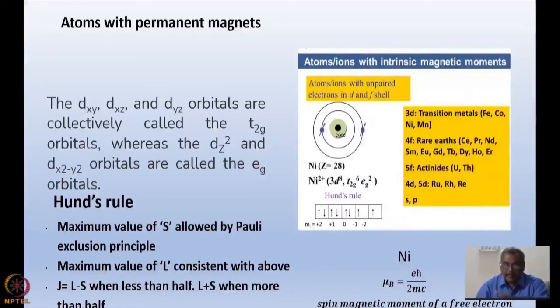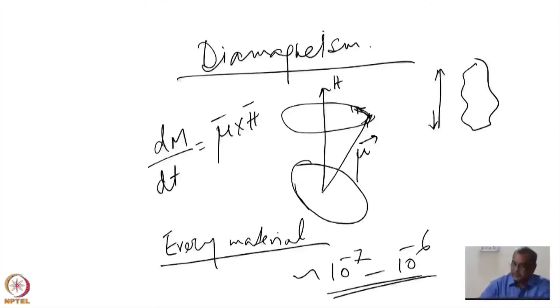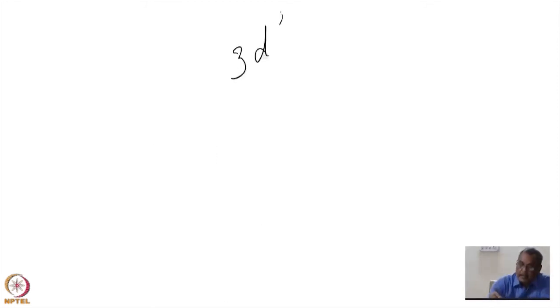Hund's rule says maximum value of S allowed by Pauli exclusion principle, then maximum value of L. If the shell is less than half filled, J is equal to L minus S, and J is equal to L plus S when more than half filled. I will do it for nickel. Nickel is 3D8.